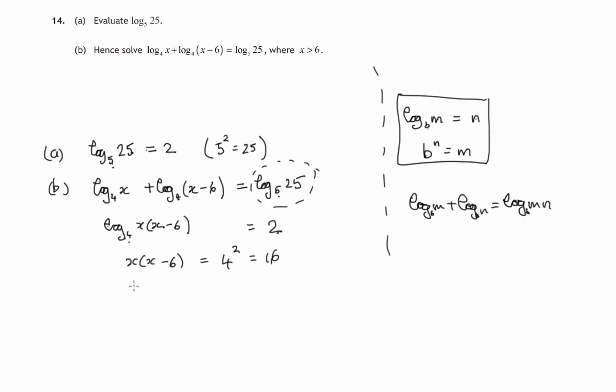So we're ending up with a quadratic equation. x squared minus 6x equals 16, or take 16 from both sides, minus 16. Hopefully this will factorize.